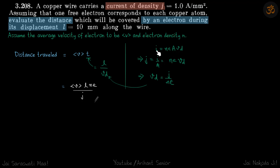And I we can relate to J because J is given in the problem. So we write J equals I by A equals NEVD. And from here, VD is J by NE.